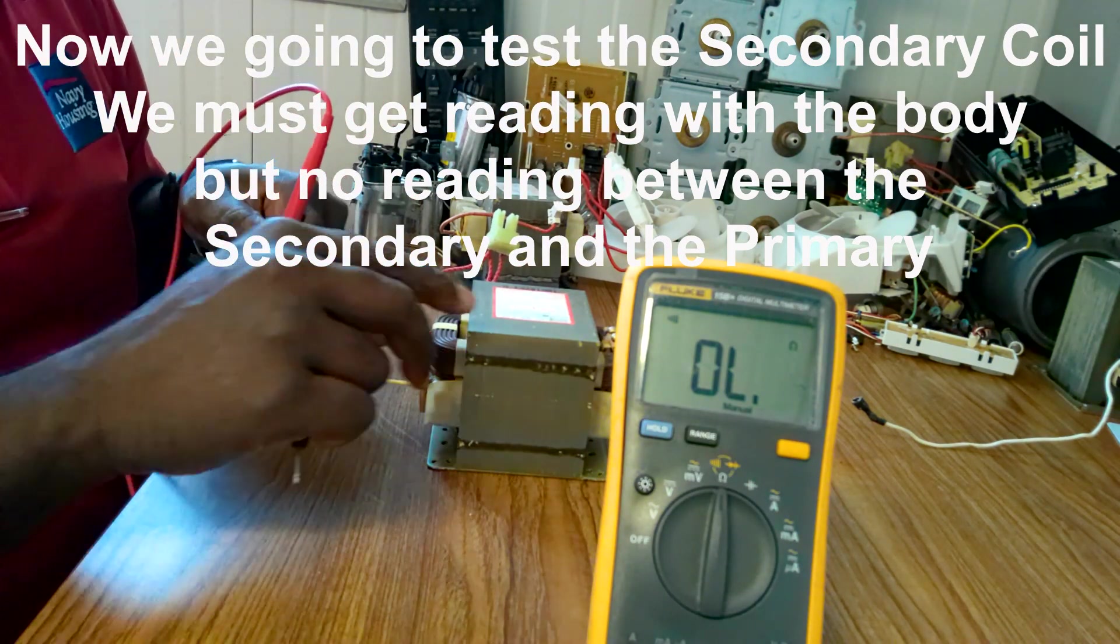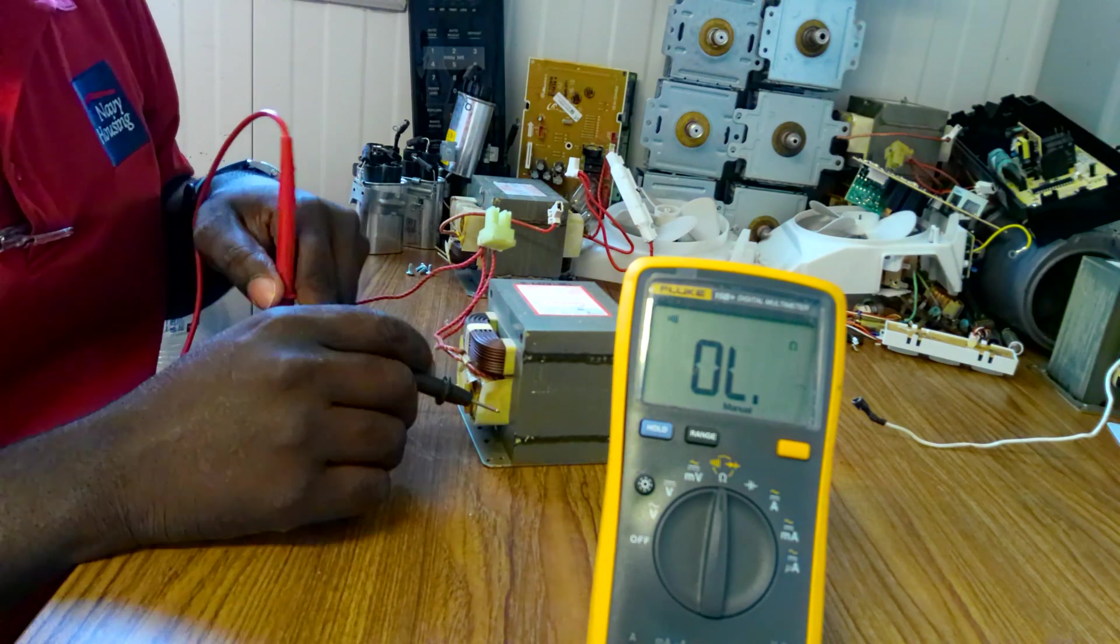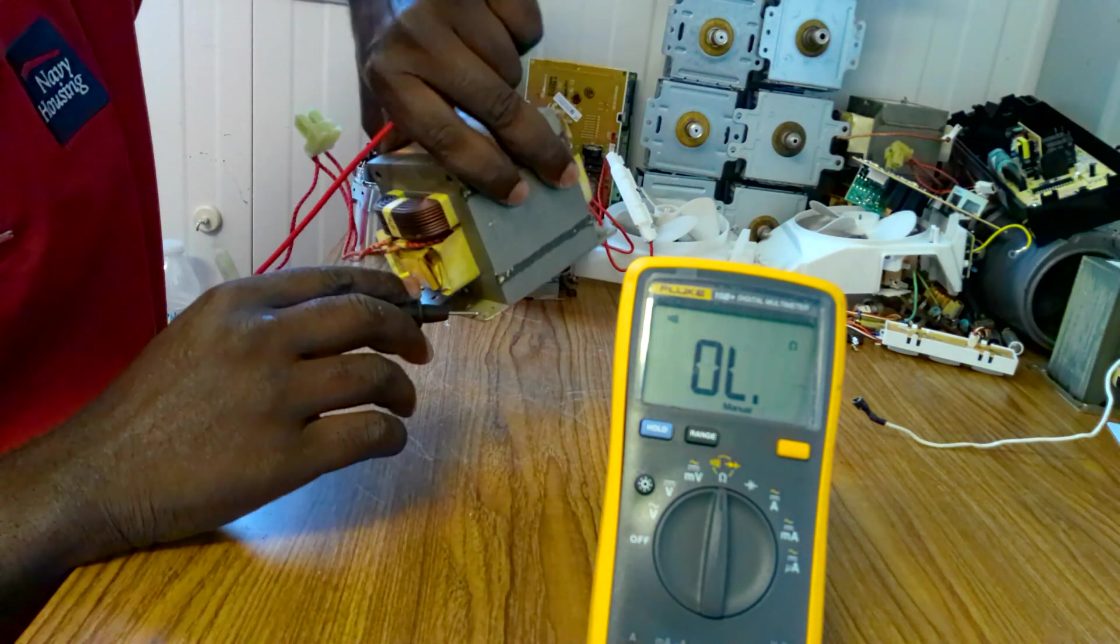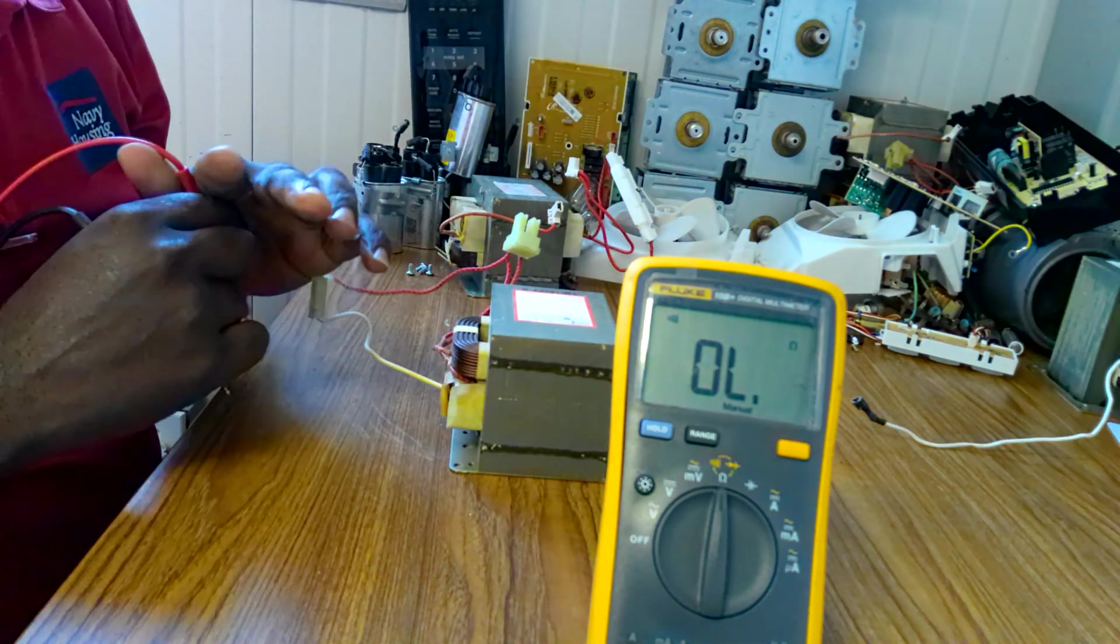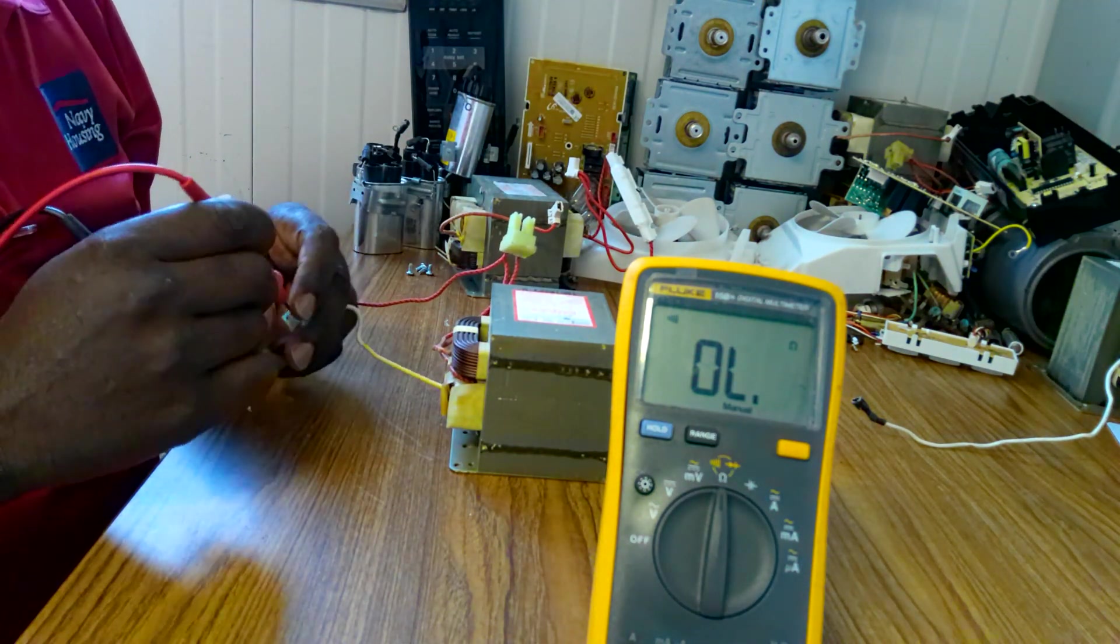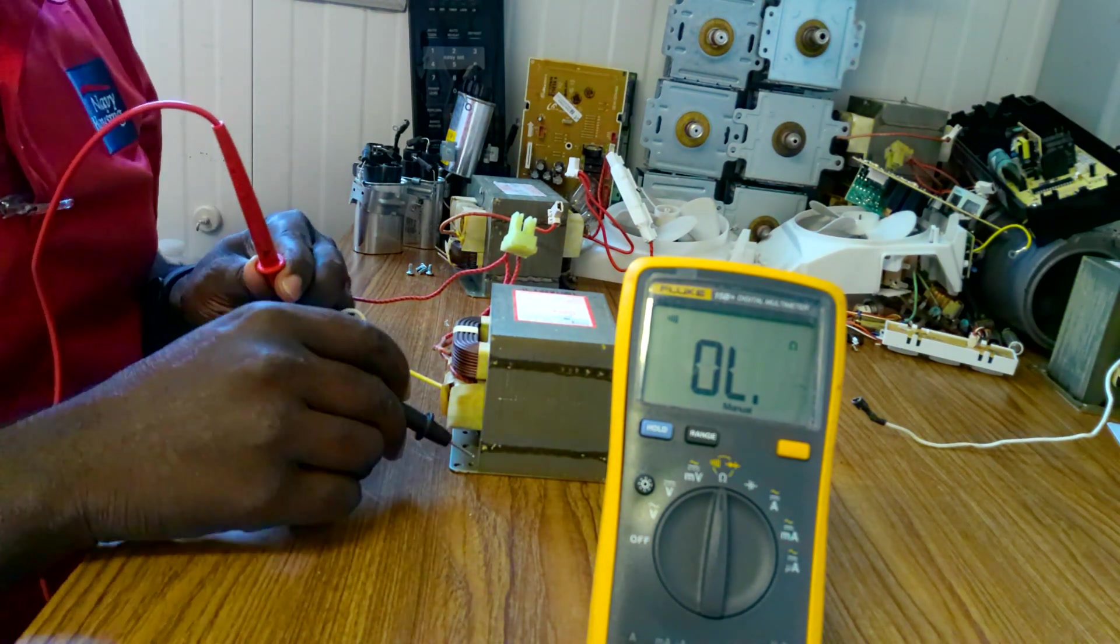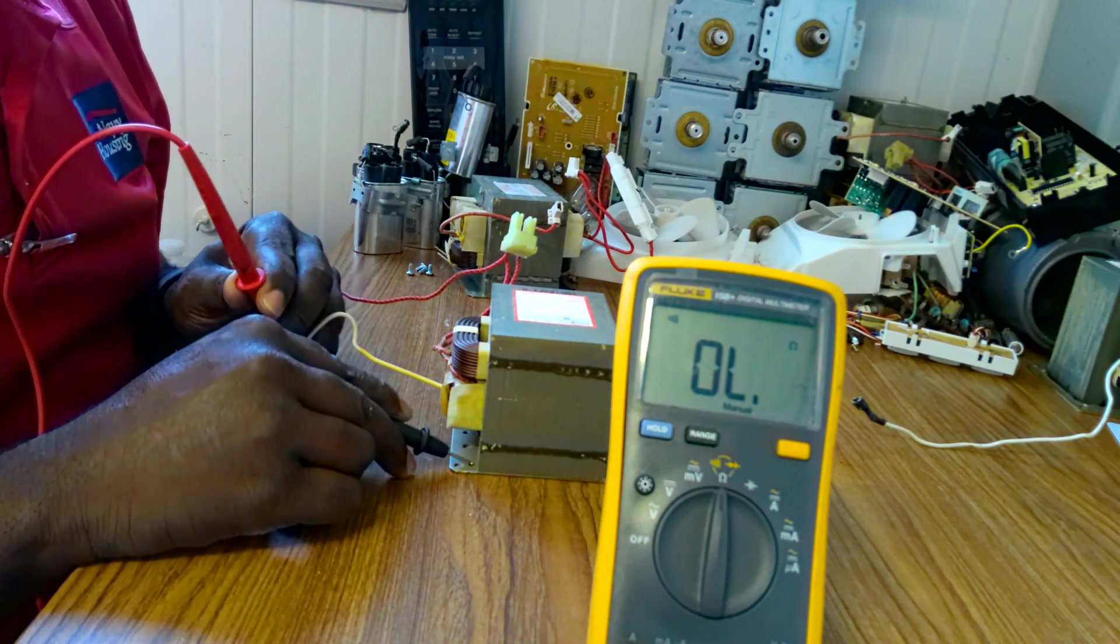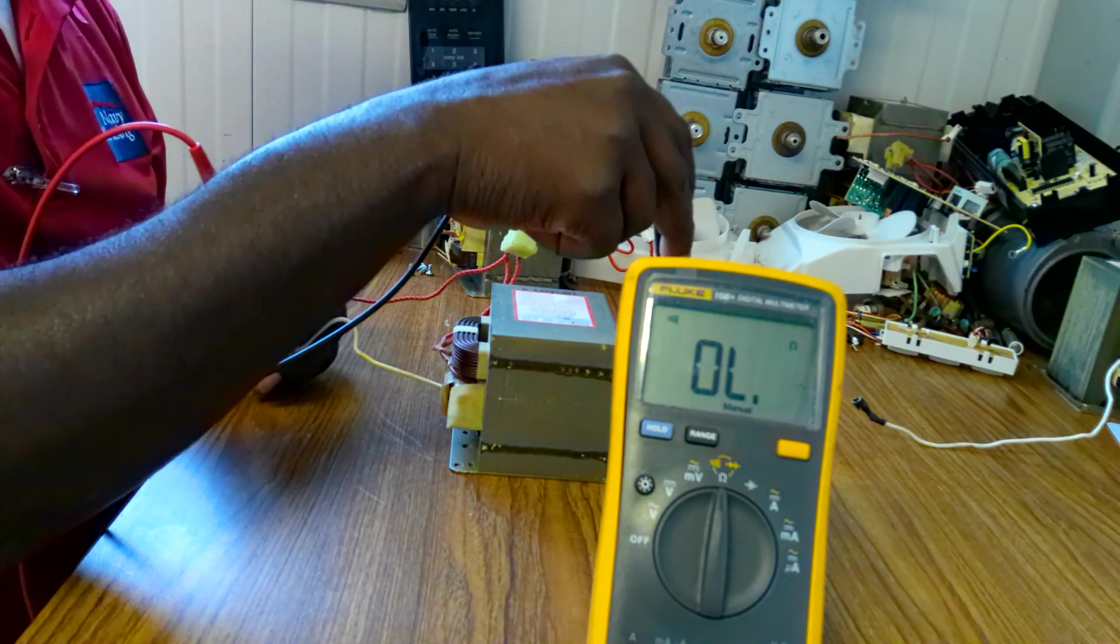Now with the secondary, you can touch the casing. But remember I said where the screw works is the basic case. So the secondary and the case, you must have a reading. See, there's a reading. But there's no reading with primary.